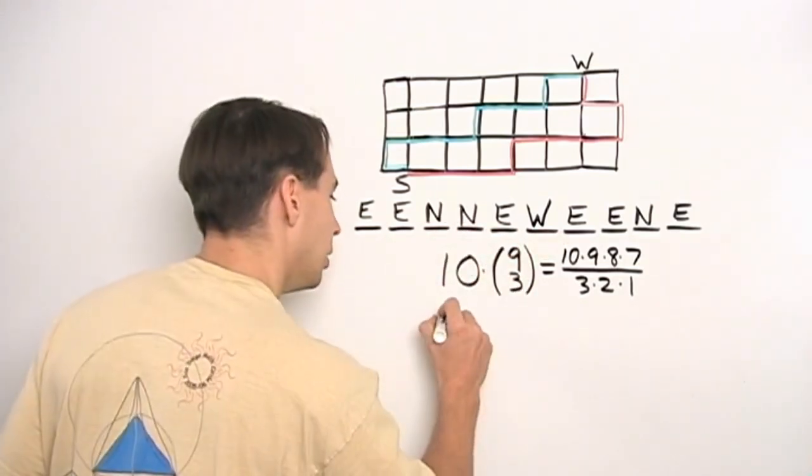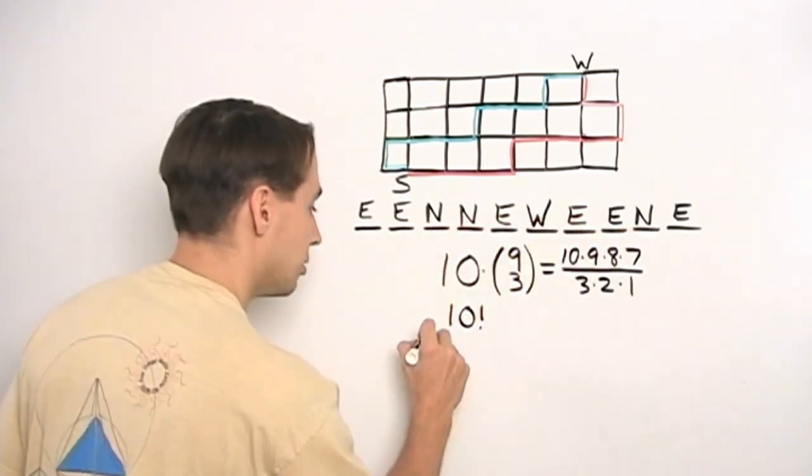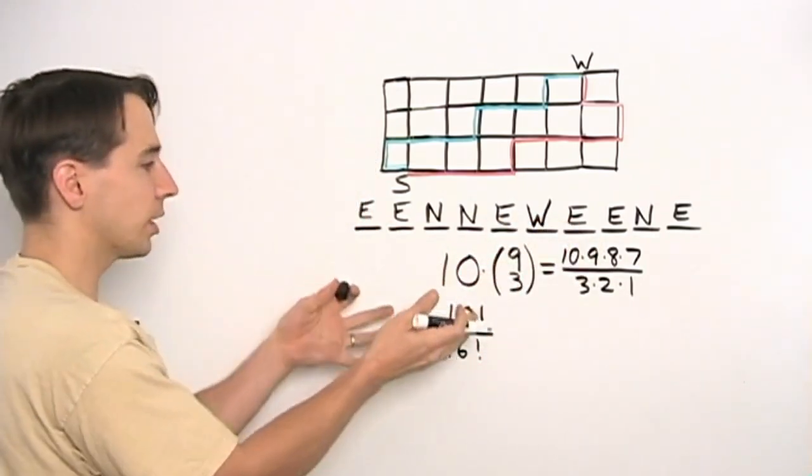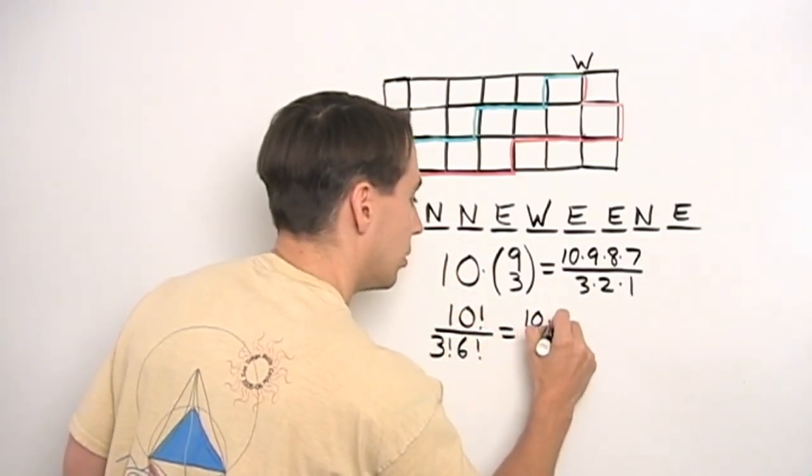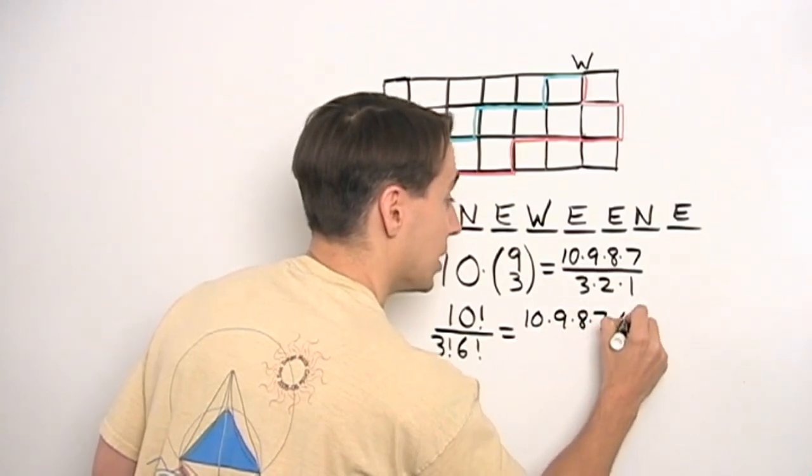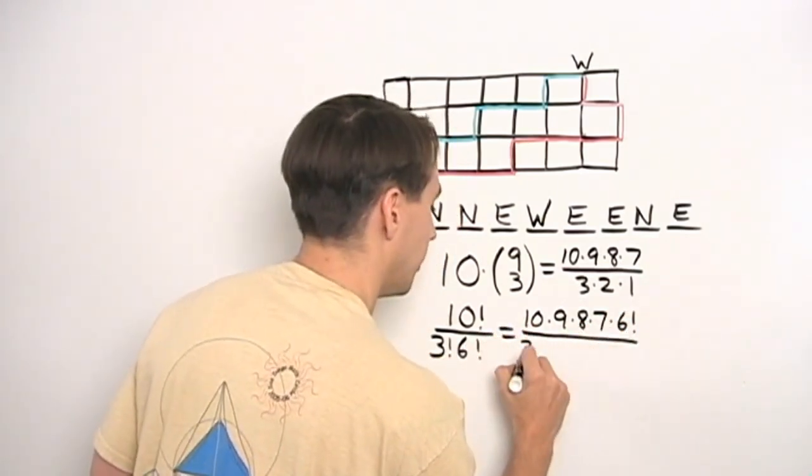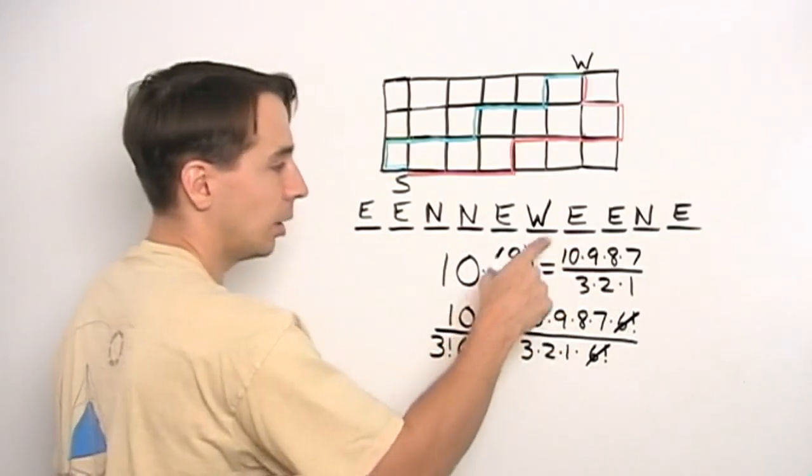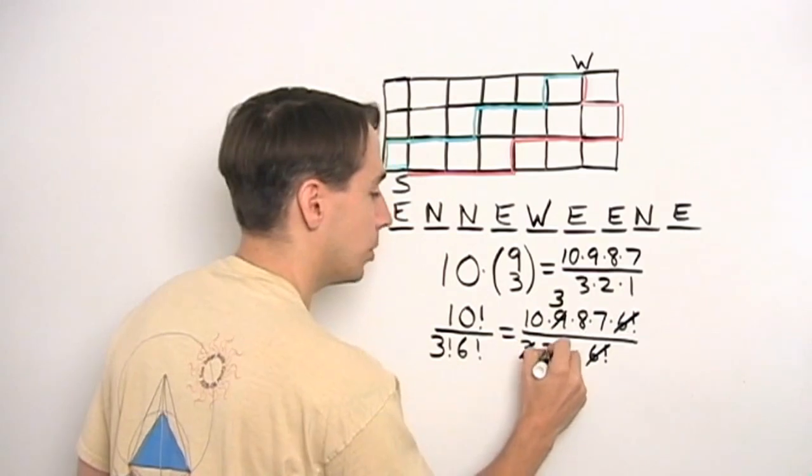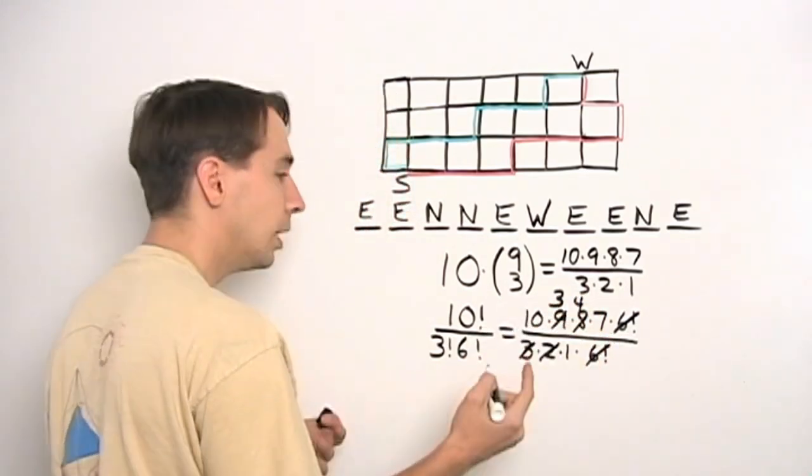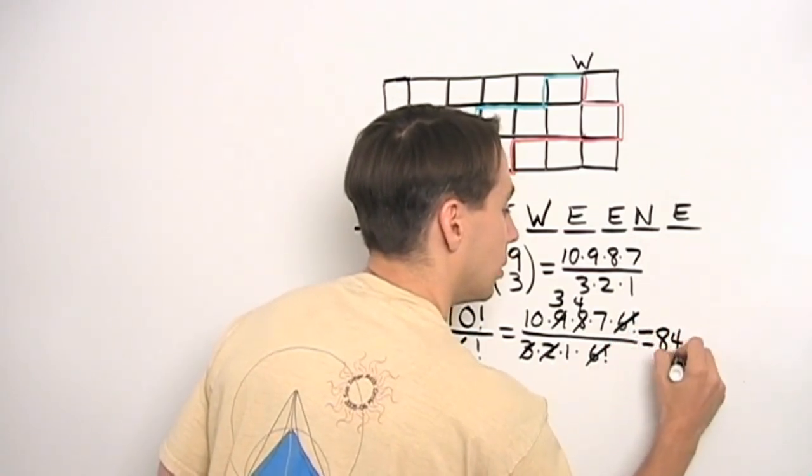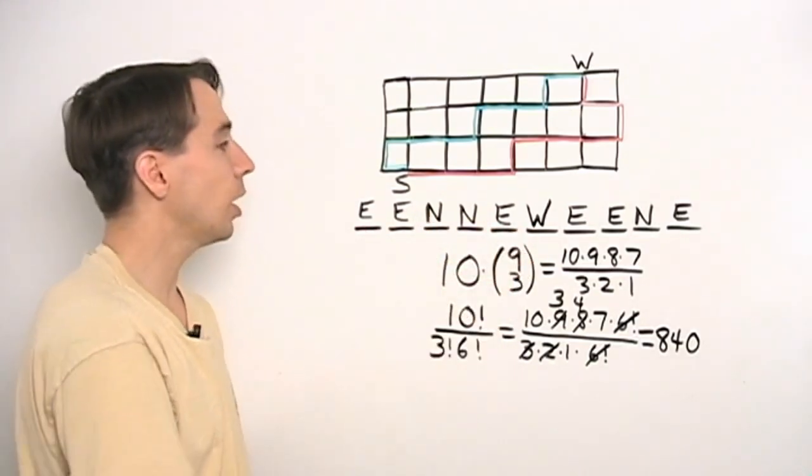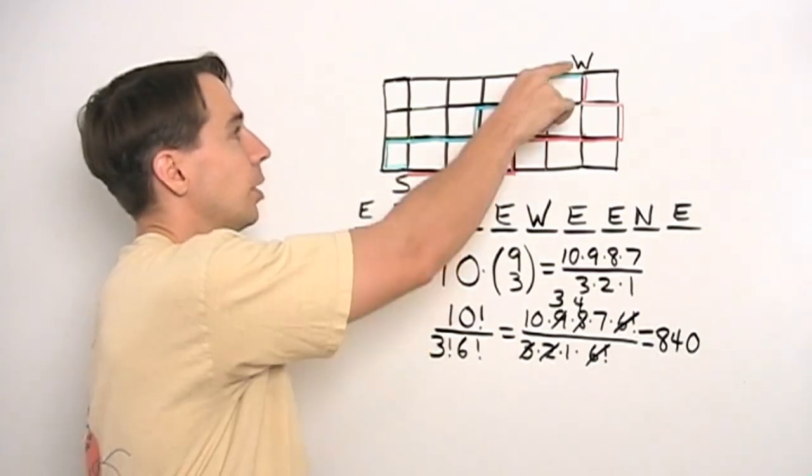There are ten letters in NNNEEEEEEW. And then we have to divide by three factorial for the N's. And then we have to divide by six factorial for the E's. Now first you might think, wait a second, these answers look different. But when we write ten factorial as ten times nine times eight times seven times six factorial, we see our answers are the same. Because the six factorials here, they cancel. And these two numbers are the same. And then we can just sit there and we can do the arithmetic now. Three cancels with nine leaves three. Two cancels with eight leaves four. Three times four is twelve. Times seven, that's eighty-four. Times ten is eight hundred and forty.